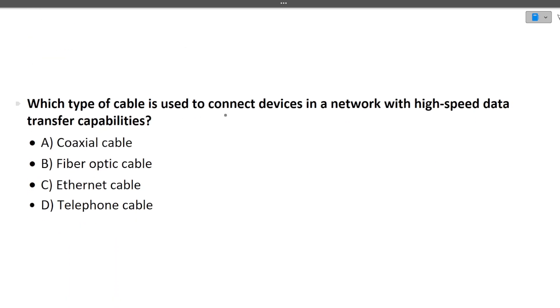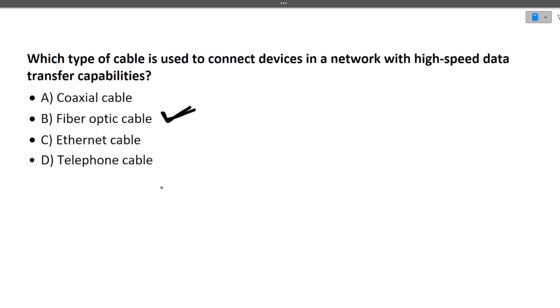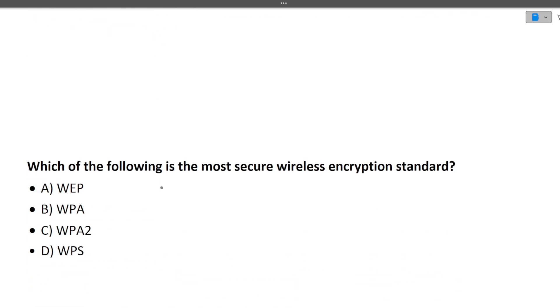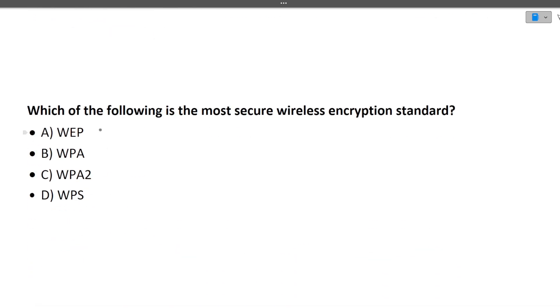The next question is: which type of cable is used to connect devices in a network with high-speed data transfer capabilities? The answer is fiber optics — fiber optic cables support very high data transfer speeds.